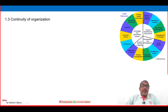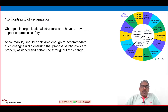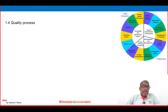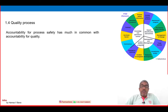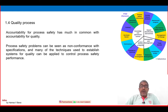Sub-element 1.3 is Continuity of Organization. Changes in organizational structure can have a severe impact on process safety. Accountability should be flexible enough to accommodate such changes while ensuring that process safety tasks are properly assigned and performed throughout the change. Sub-element 1.4 is Quality of Process, which is very important. Accountability for process safety has much in common with accountability for quality.